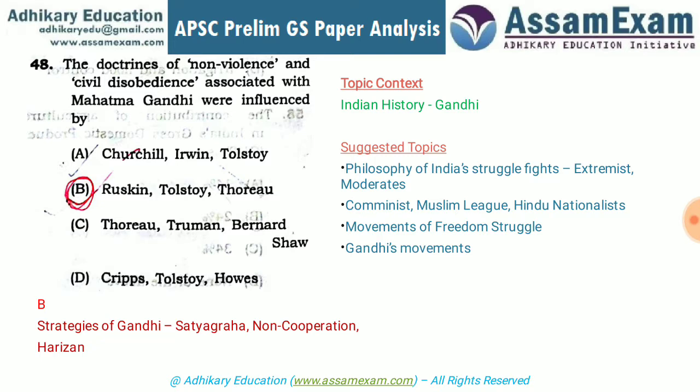Suggested topics include the philosophy behind the various movements of India's freedom struggle. Many groups participated in their own way — Extremists were more violent, Moderates were non-violent, Communists were leftist, and Muslim League and Hindu Nationalists were more religiously centric. You can expect questions about Gandhi's movements, the philosophies of various freedom fighters, and the different approaches to freedom struggle.